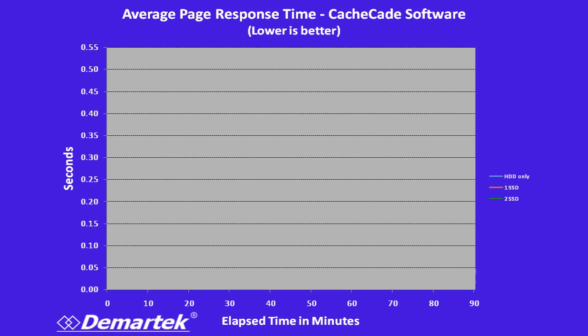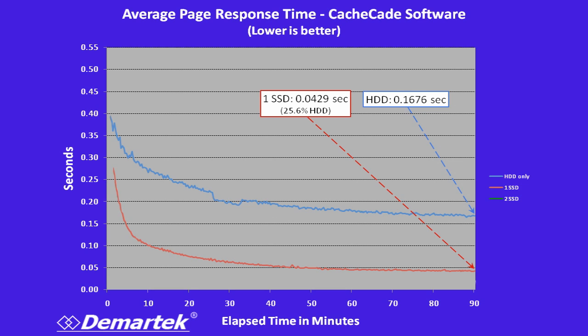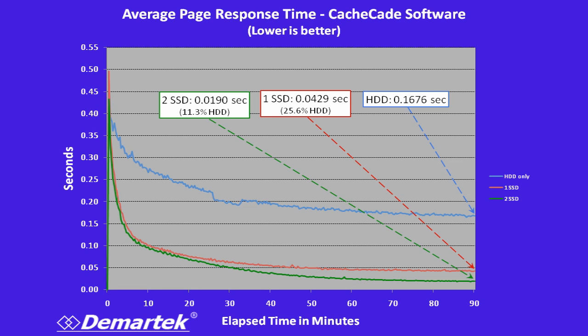Lastly, let's look at response time — the time it takes for the server to respond to a request from the client. Over time, response time drops. For hard drives, we got down to less than two-tenths of a second. By adding the first SSD, that dropped to about a quarter of the time it took for the hard drives to respond. The second SSD decreased it even further, down to around 11% of the hard drive response time. SSDs in a caching configuration provide a great performance boost.